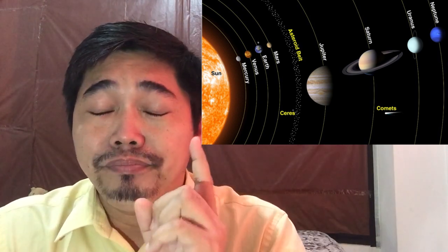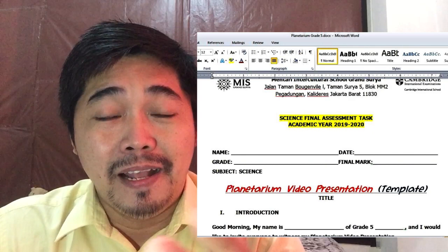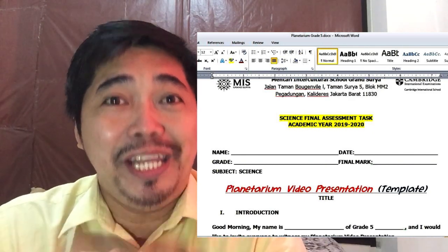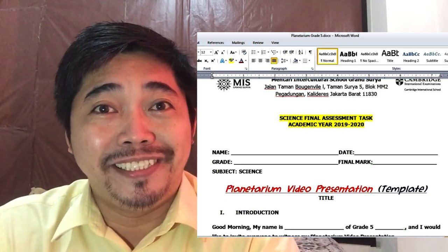The planetarium template that I have sent to you in the model will be used as your guide in making your video presentation. As a rule, you have to start with an introduction — for example: 'Hi, my name is Gondi of Grade 5 Ganesia, and I would like to invite everyone to witness my video presentation about the planetarium.' Then you will start with the Sun.